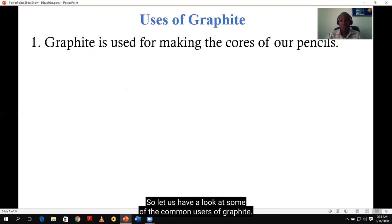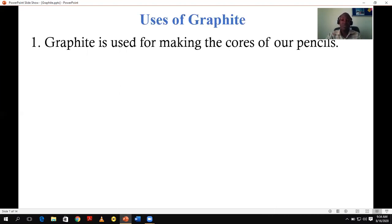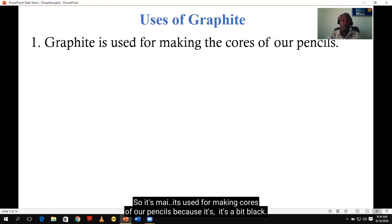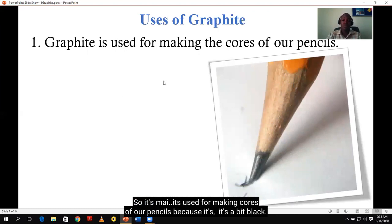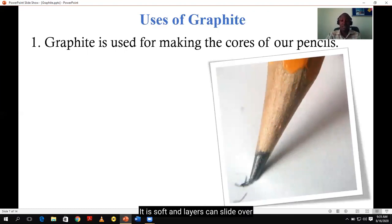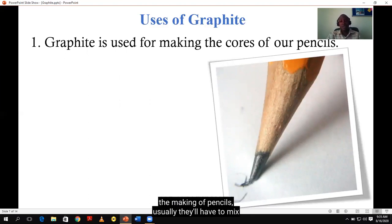So let us have a look at some of the common uses of graphite. Obviously, graphite got its name from a Greek word called graphene, which meant writing. So it's because graphite primarily used initially was for making pencils. That's how it got its name. So it's used for making cores of our pencils because it's a bit black, it is soft, and layers can slide over one another. When you look at the making of pencils, usually they'll have to mix graphite with clay and water to make these pencil leads or pencil nibs. So the more clay they put in, the harder the pencil nib will be. So basically, this is one of the primary uses of graphite.